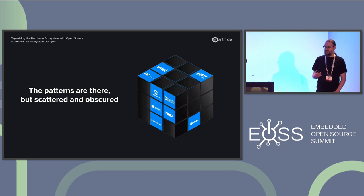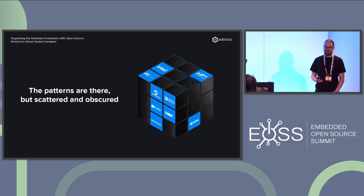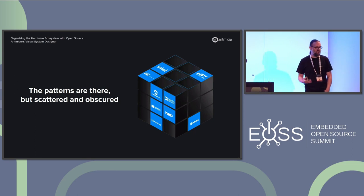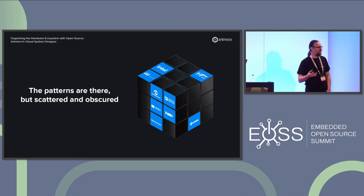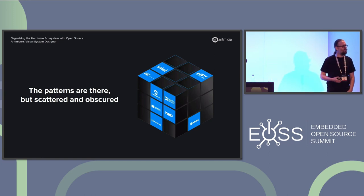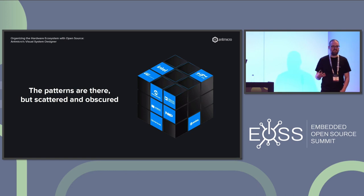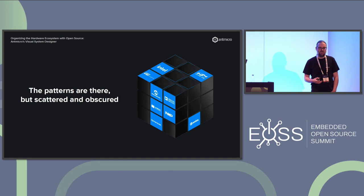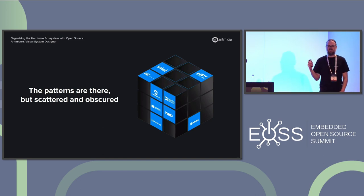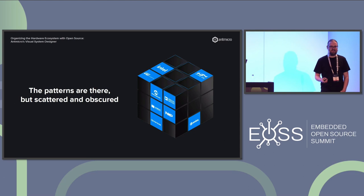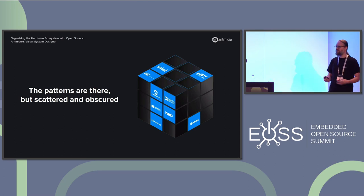Fortunately, in reality, if you're building hardware, you are building physical things and there are patterns in the real world. If people are building chips, they're basing those chips on existing IPs — they're not reinventing the wheel all the time. They're kind of churning out silicon that's similar and everyone's using similar tools underneath. There are patterns, but the problem is they're scattered amongst data sheets, the heads of FAEs, and internet forums.